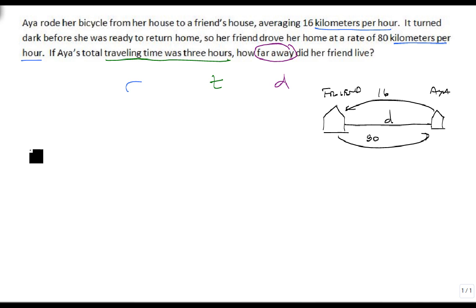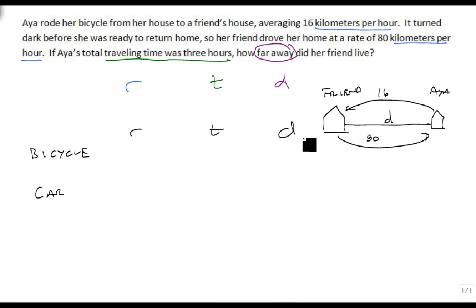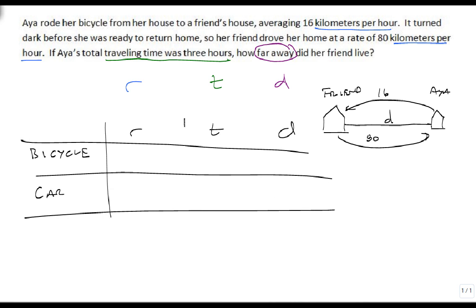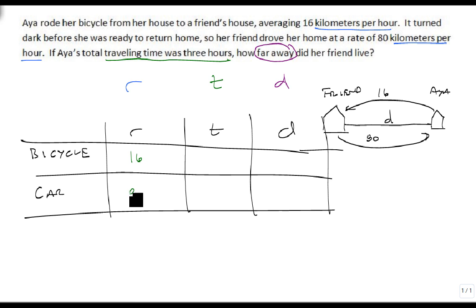I also like to make a table. We've got a bicycle and we have a car. We have an R, a T, and a D. We know that we have 16 kilometers per hour and 80 kilometers per hour. We have D and D for the distances, and we have two unknown times: T1 and T2.